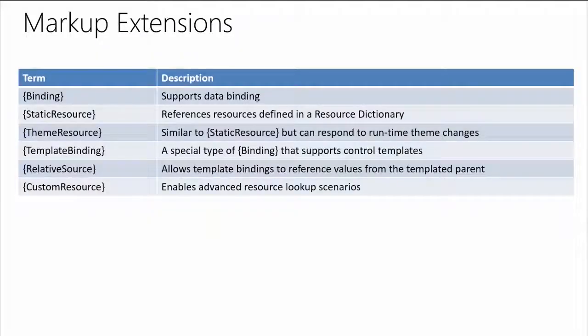Continuing in the markup extensions: we also have RelativeSource. It allows you to see what's nearby. WPF developers might expect to see ancestors, but that's not what this is about. This is about binding to yourself — one of your properties bound to another of your properties, perhaps via a converter, or going all the way up to your templated parent, which is valuable in the content template mode. Those are the only two modes from RelativeSource: bind to self, or go up to the control template.